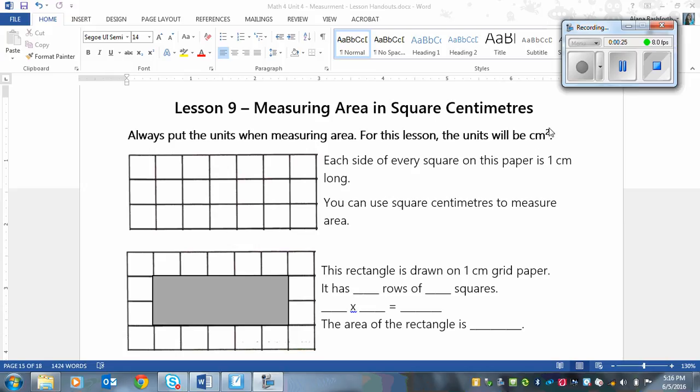For this lesson, the units are going to be centimeters squared, and the squared means that we are now two-dimensional. We're measuring the area of a flat surface, not just the length of a line. The centimeters is obviously because we're going centimeters squared.